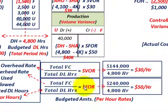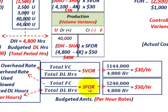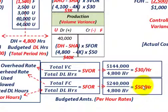For the standard fixed overhead rate, take the total budgeted fixed overhead cost for the period and divide by the total budgeted direct labor hours. Total fixed costs are $240,000, divided by 4,800 denominator hours, giving a $50 per hour standard fixed overhead rate. So for every direct labor hour, $50 is charged for fixed overhead.